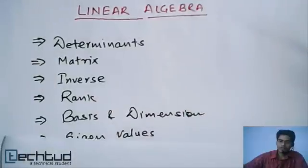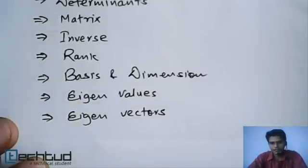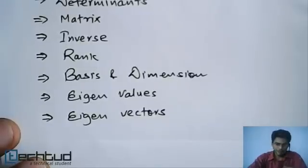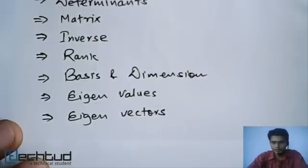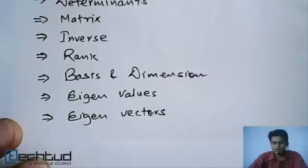Finally, we will find eigenvalues and then eigenvectors, and then we will wrap up this chapter with studying the Cayley-Hamilton theorem and its applications. Throughout this entire chapter, we will be covering various GATE questions from other branches as well, because mathematics is common to all branches and this linear algebra and matrix portion is common to all branches.